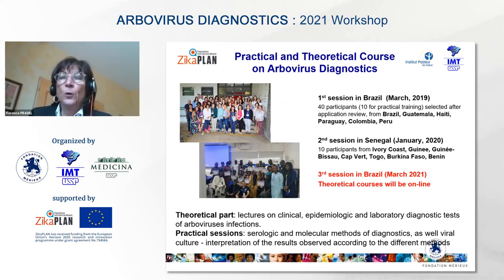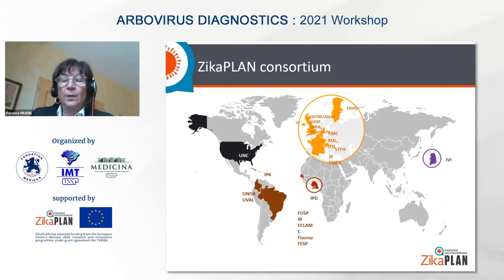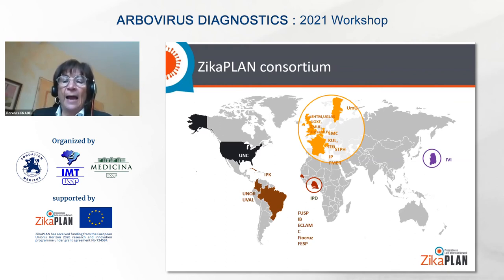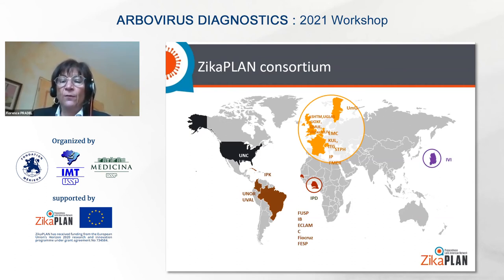All these workshops could be organized thanks to Zikaplan. So what is Zikaplan? Zikaplan is a consortium of 25 partners in Latin America, North America, Africa, Asia, and various centers in Europe. It is funded by the European Commission with the aim to set up a research network across the Latin America region to facilitate, coordinate, and implement research against the Zika outbreak and lay the foundation for a preparedness research network against any future emerging severe infectious threats.